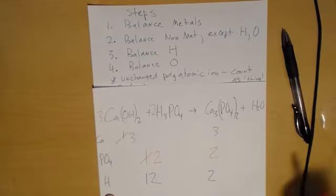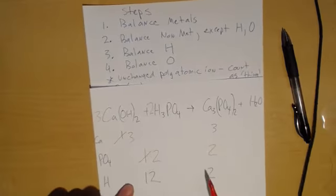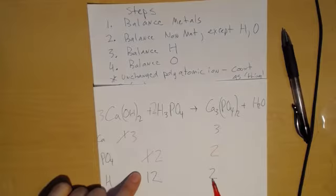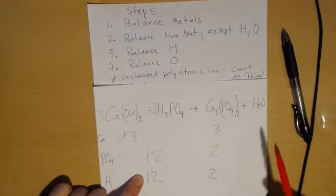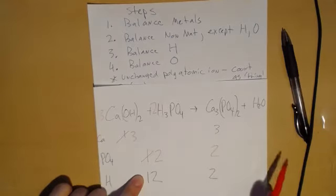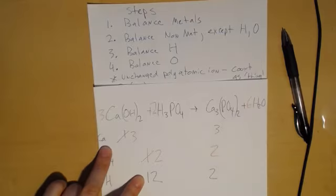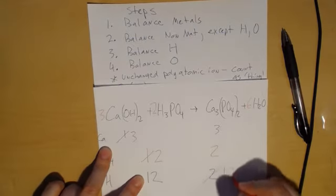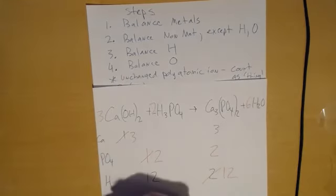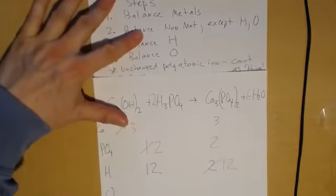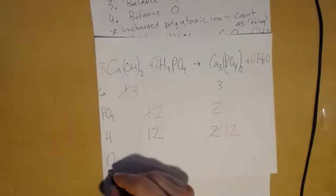How do I fix it? I want to get 12. This is the idea of the lowest common multiple. The lowest common multiple between 2 and 12 is 12. I want 12 on both sides. Someone said 'add six' — technically we're multiplying by six, or putting a six in front. Six times two gives us 12. Now let's check the oxygens.